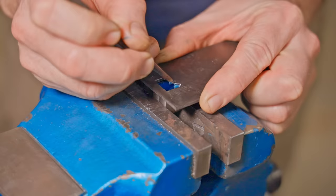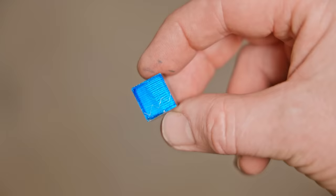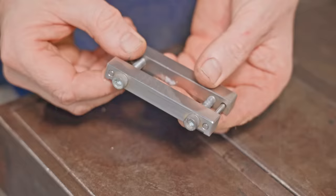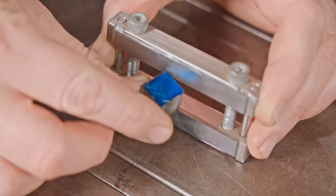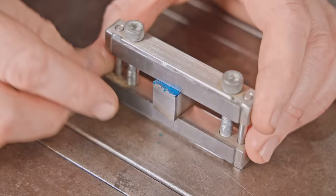Next I'll file the pointy bits which are the teeth of the logo and to help keep that accurate and consistent I'll use a file guide. This will hold the pieces and using the carbide faces I can control where to file to. First I'll file the majority of the waste away so I'll set the guide to the points of the three teeth.